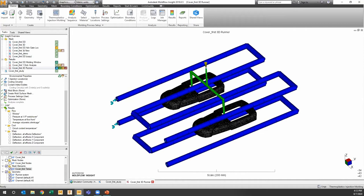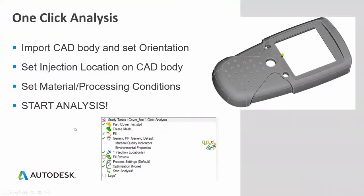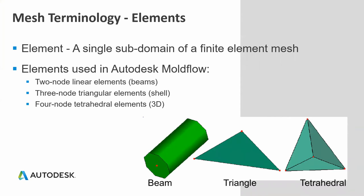Now let's talk about mesh. If you're afraid of meshing, the good news is you don't even have to mesh ahead of time. You can do what we call a one-click analysis: import your CAD, orient it so Z is the open-close direction, set a gate location directly on the CAD, set material and process conditions, and click Start Analysis. The software will mesh the part in the background and then solve. But let's look at how to create the mesh step by step.